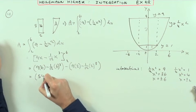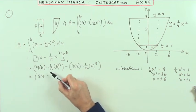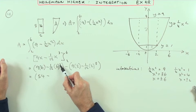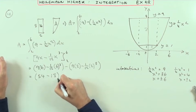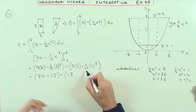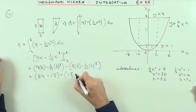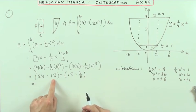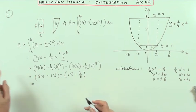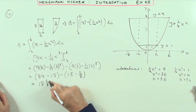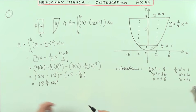Working out the arithmetic: that's 54 minus 18 minus the bracket 18 minus 2 thirds. The twelfth of 6 cubed: 6 cubed is 216, divided by 12 is 18. And 8 over 12 is 2 thirds. So I've got 54 take away 18 take away 18, which leaves 18, plus 2 thirds. So that area is 18 and 2 thirds.